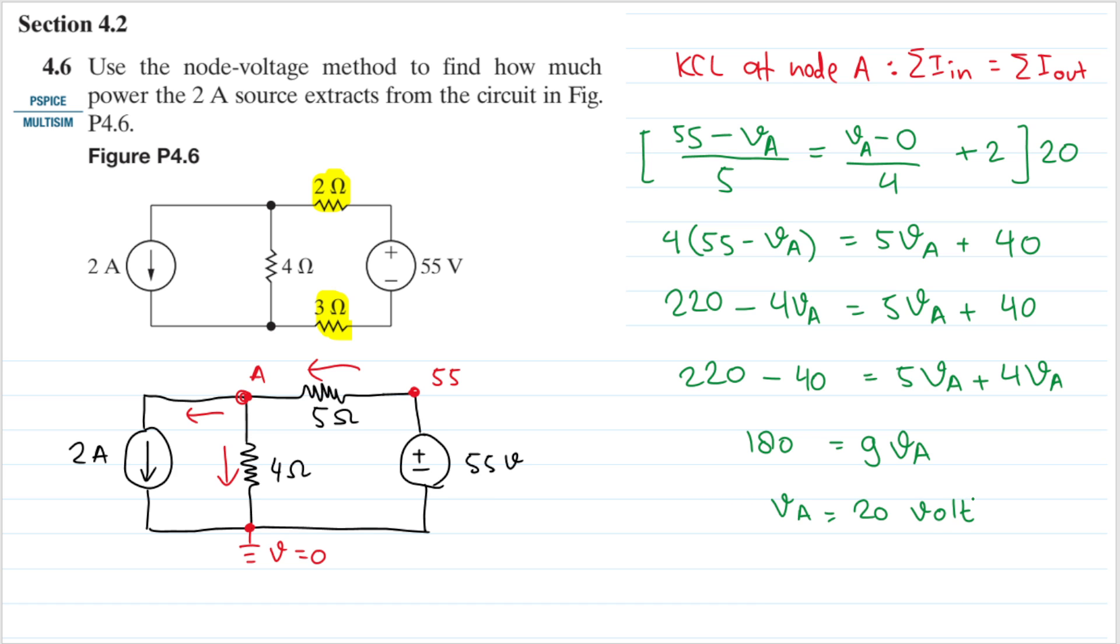That means that the voltage here is 20 volts. And then the power that the 2 ampere source extracts - power is the voltage in this case VA multiplied by the current, so VA multiplied by I.